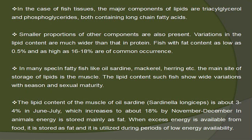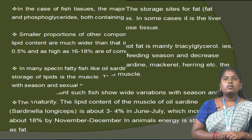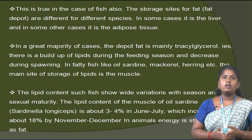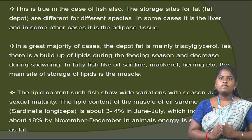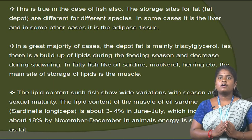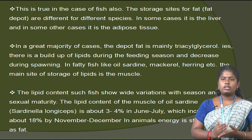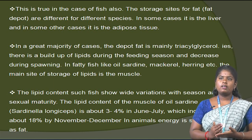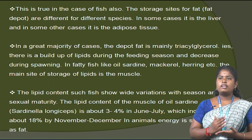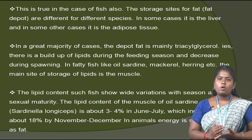In animals, energy is stored mainly as fat. When excess energy is available from food, it is stored as fat and utilized during periods of low energy availability. This is true in the case of fish also. The storage site for fat differs between species. In some cases it is the liver, and in other cases the adipose tissues. In the great majority of cases, depot fat — mainly triglycerol — builds up during the feeding season and decreases during spawning.